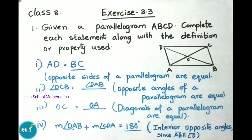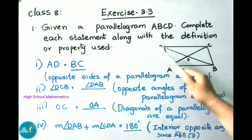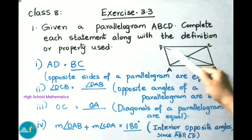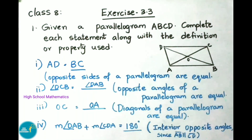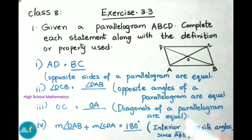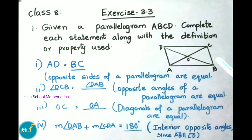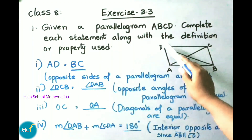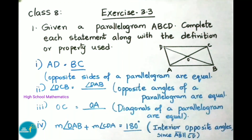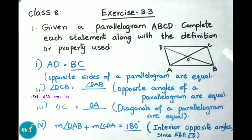See now question number 1: given a parallelogram ABCD, complete each statement along with the definition or property used. First, AD is equal to BC. Why? Because opposite sides of a parallelogram are equal. Second, angle DCB is equal to angle DAB, since opposite angles of a parallelogram are equal.